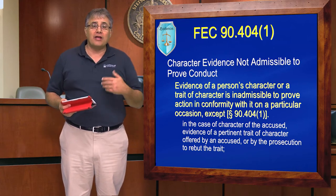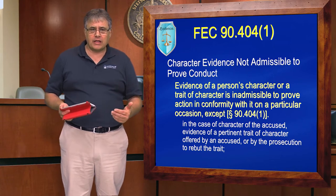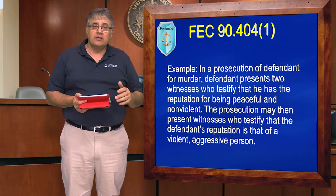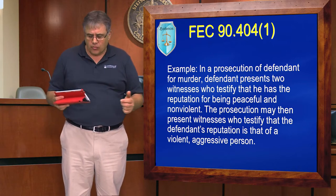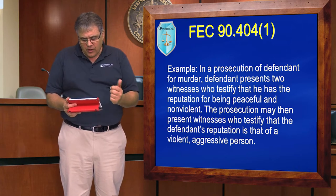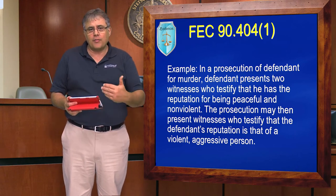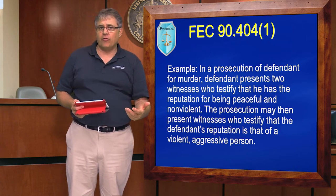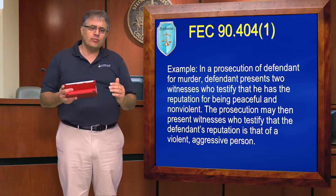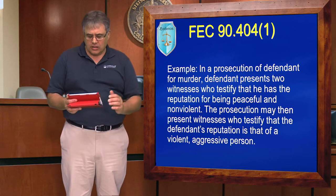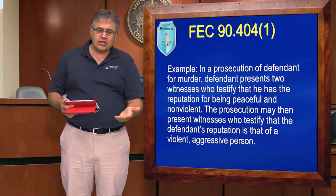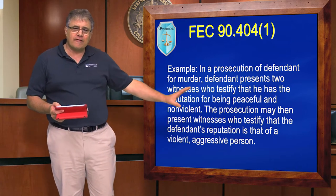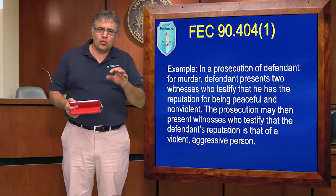The way they do that is by offering evidence of character, either through direct testimony or cross-examination. Once that happens—and I've got an example here—the door has been opened and the other side, normally the prosecution, can rebut. So here we've got someone being prosecuted for murder. The defendant calls two witnesses who testify that the defendant has a reputation for being peaceful and nonviolent. In the state of Florida, reputation testimony is allowed under 405, but opinion testimony is not. This opens the door for the state, and now the prosecution can present witnesses who testify that the defendant's reputation is that he is a violent, aggressive person. That's the way the door of character swings in Florida.